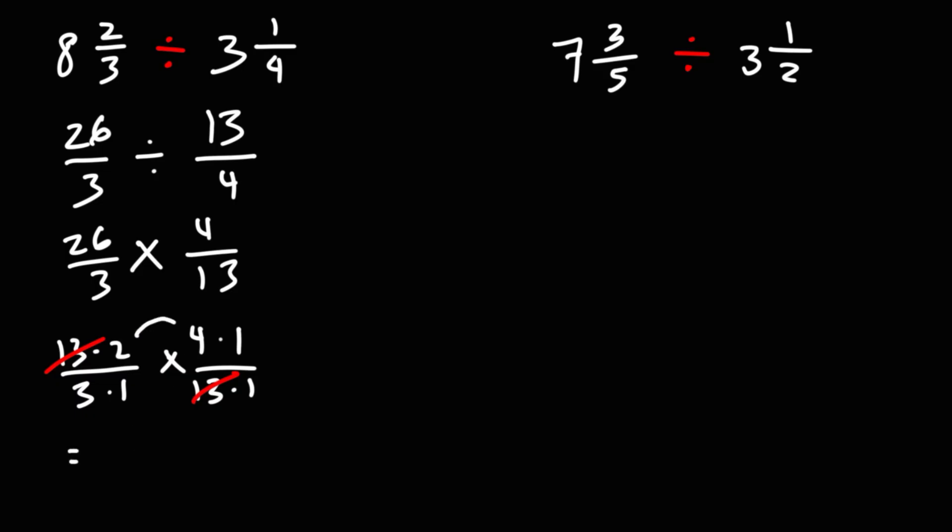So what we're left with on the numerator is 2 times 4, which is 8, and on the bottom 3 times 1, which is 3. So the answer as an improper fraction is 8 over 3.